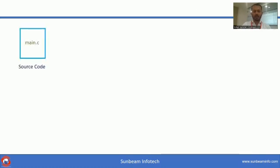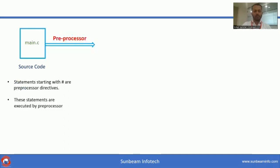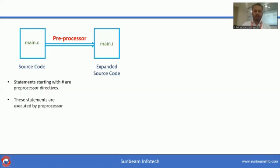This is our source code. Firstly, this source code is given to the preprocessor and we get expanded source code. In our source code, all the statements starting with hash — that are hash include, hash define — these are called preprocessor directives. These preprocessor directives are executed and expanded by the preprocessor.